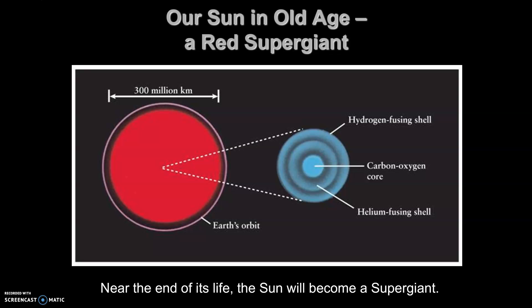When our Sun becomes a red supergiant near the end of its life, it will have a carbon-oxygen core, a hydrogen-fusing shell, and a helium-fusing shell. You may notice from chemistry that the core is getting heavier and heavier — hydrogen is our lightest element, helium is the second lightest, but carbon and oxygen are heavier elements created because of the atoms fusing together to make these larger elements.